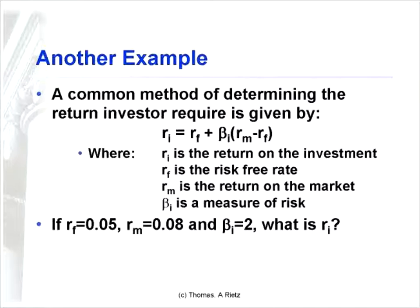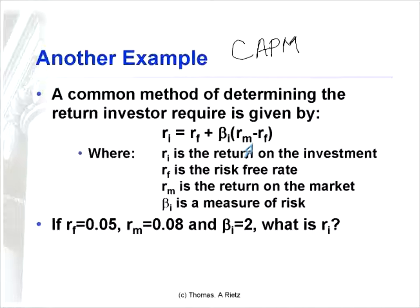Here's another common formula we're going to use in class — the Capital Asset Pricing Model, frequently denoted CAPM. It says the return on any investment is equal to a constant, the risk-free rate, plus a measure of risk called beta times the quantity known as the risk premium — that quantity is the return on the market minus the risk-free rate.